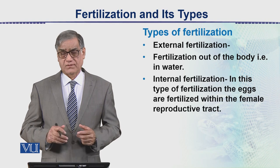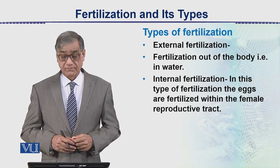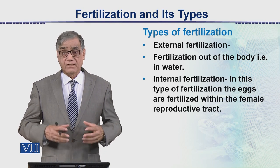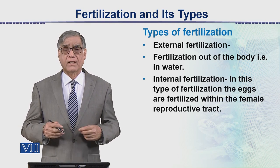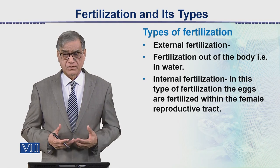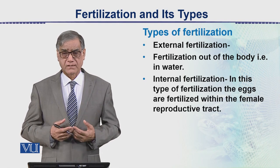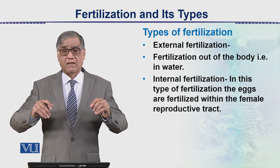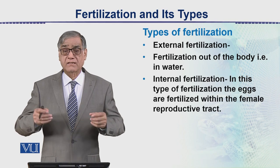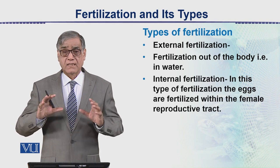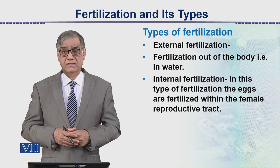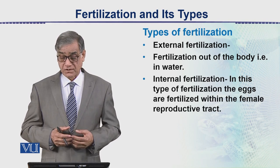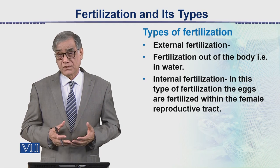There are two types of fertilization: external fertilization and internal fertilization. External fertilization commonly occurs in aquatic animals — in fishes and many invertebrates — where eggs are laid down in water and at the same time sperms are sprayed on them and fertilization occurs. This is what is called external fertilization.